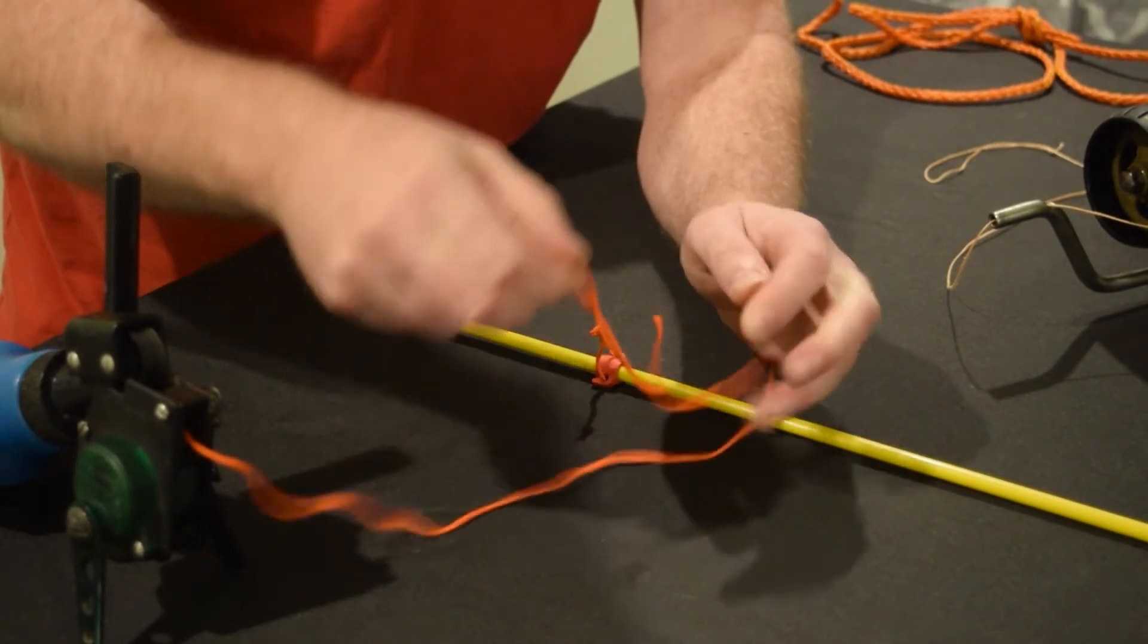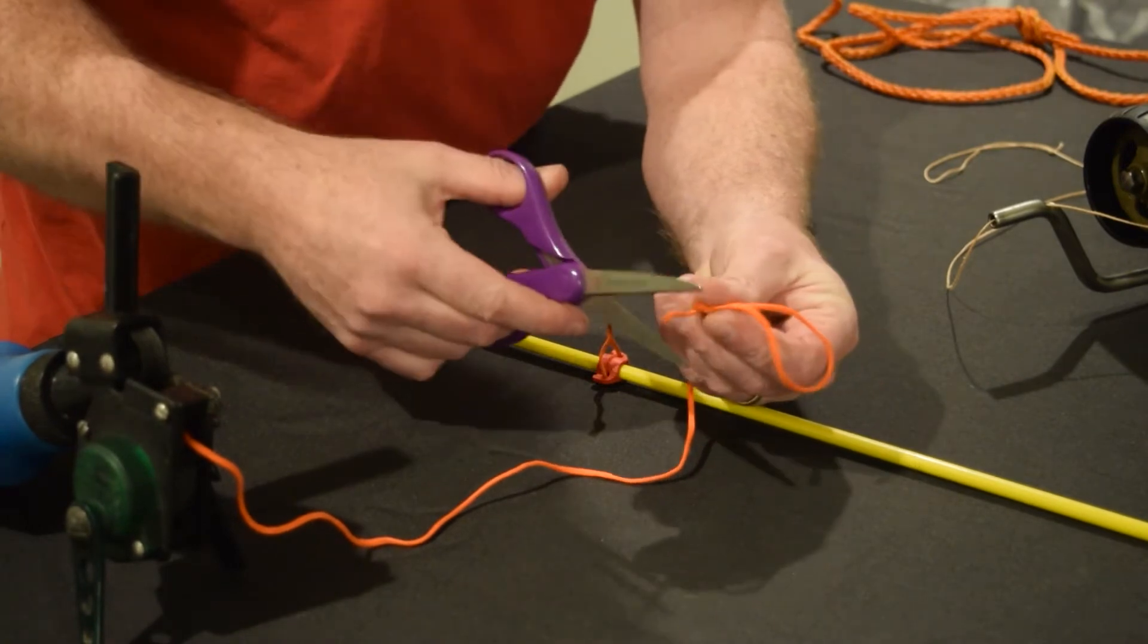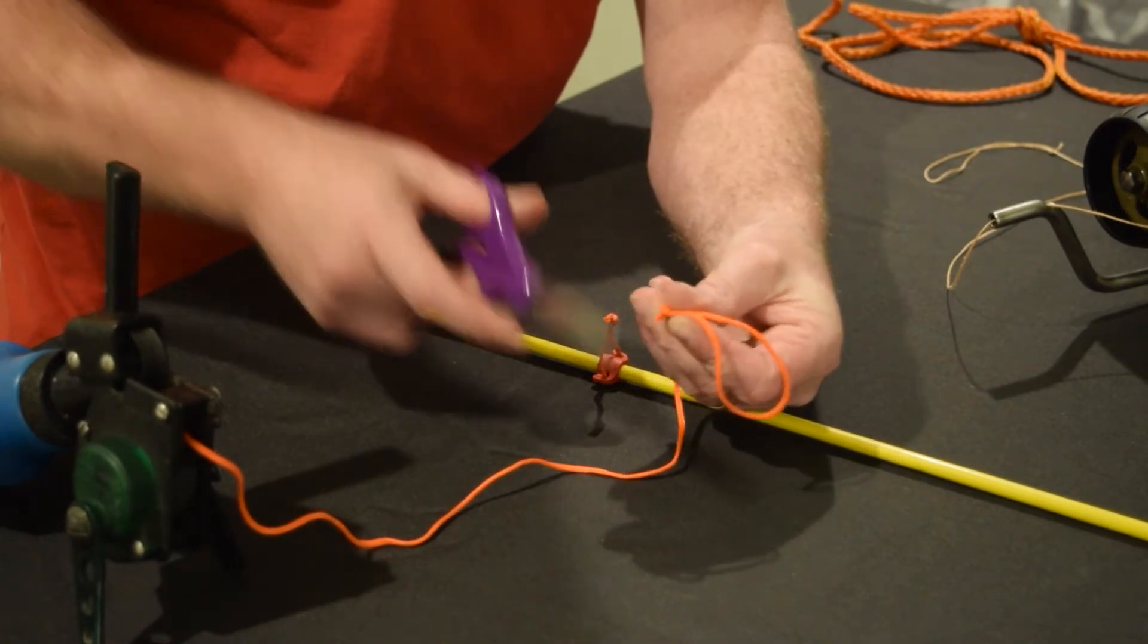I've created a loop. I have a small tag. I'm just going to cut that tag end off and hit it real quick with the lighter.